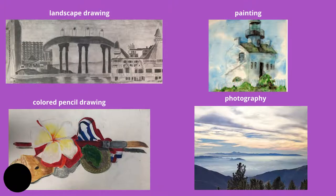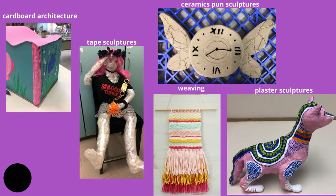We have a landscape drawing in graphite pencil, and a still life done in colored pencil. You would do another photography unit, and possibly painting — watercolor or acrylic painting on a 2D surface. Some 3D options might include cardboard architecture, where you'd design a home and then build it out of cardboard and paint it.